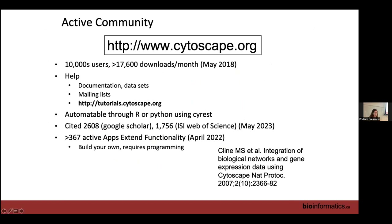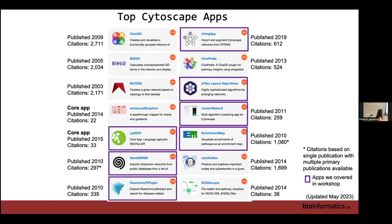It's an active community — on a daily basis there are around 10,000 users, over 18,000 downloads, and 367 active apps currently. These are some of the top apps. I don't love this picture because they don't normalize for length of time — some apps are at the top just because they've been around forever, like Bingo, one of the first apps in Cytoscape. I've highlighted the apps we'll actually be looking at: the STRING app, yFiles layout, Enrichment Map, GeneMANIA, and Reactome.